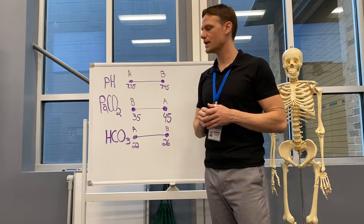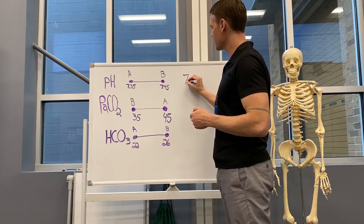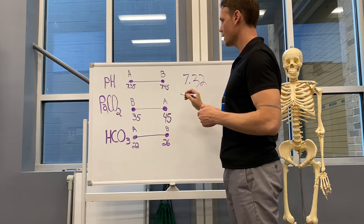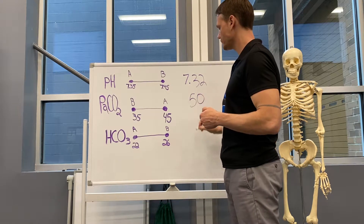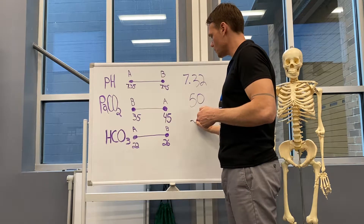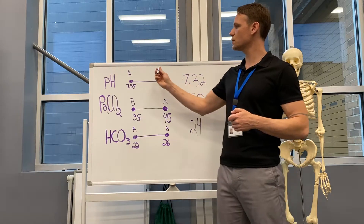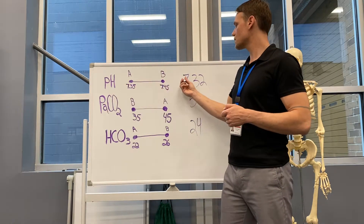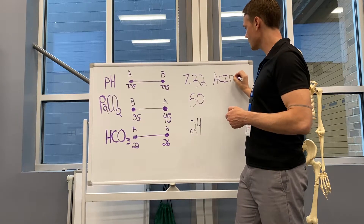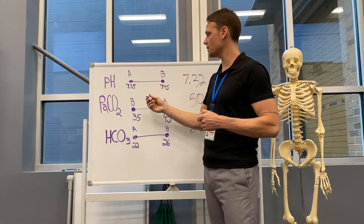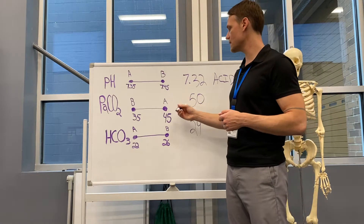Let's give an example. If we have a pH of 7.32, a PaCO2 of 50, and an HCO3 of 24 — the first thing: we are below 7.35, so we call that acidosis. Second, PaCO2 is 50, which is above 45, and that is towards an acid. So we match the A from pH with the A from PaCO2.